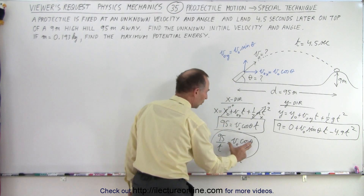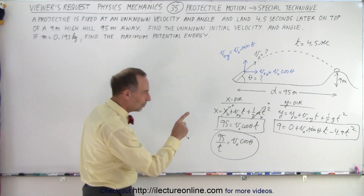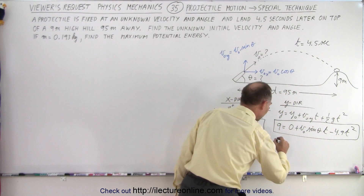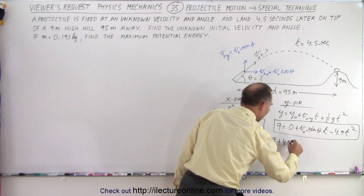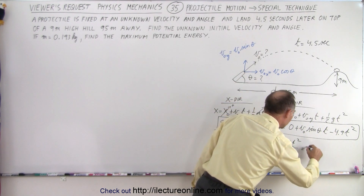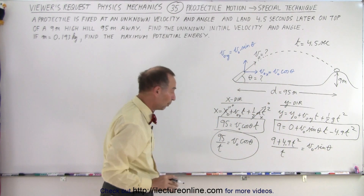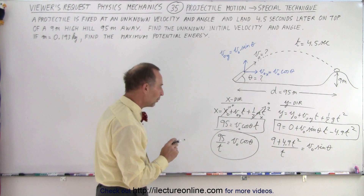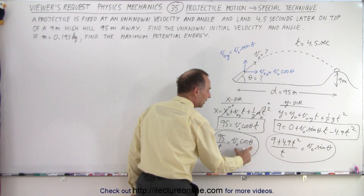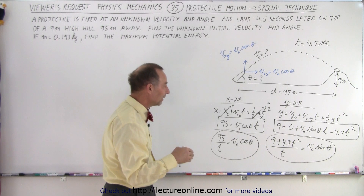Now we have the unknowns v-initial and theta on one side and everything else on the other. We do the same with the y equation: move the 4.9t² term to the left side, then divide both sides by t. We get 9 plus 4.9t² divided by t equals v-initial times sine of theta. Notice what we're going to do next: we divide one equation by the other so the v-initials cancel out and sine over cosine becomes tangent.